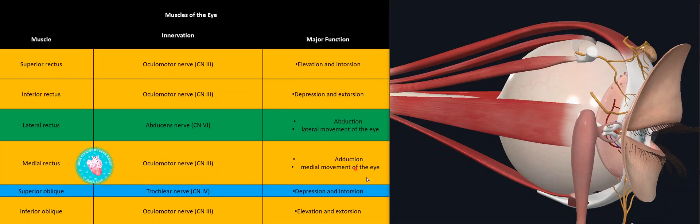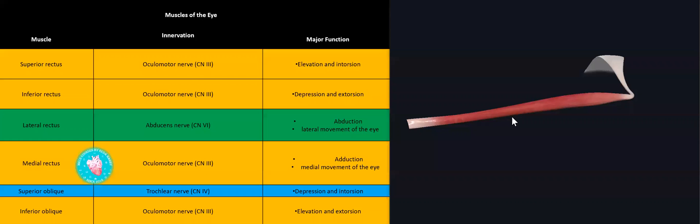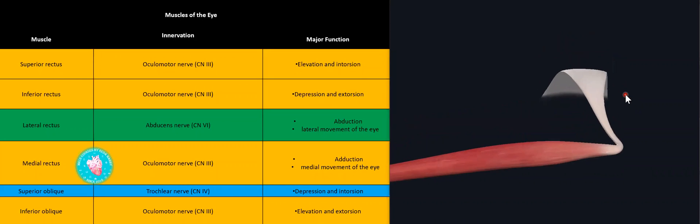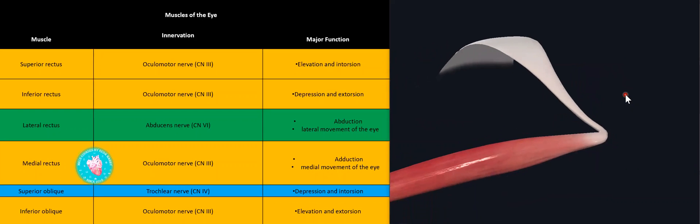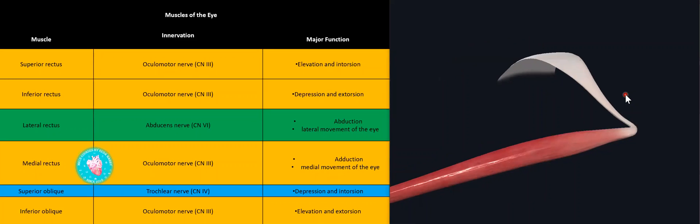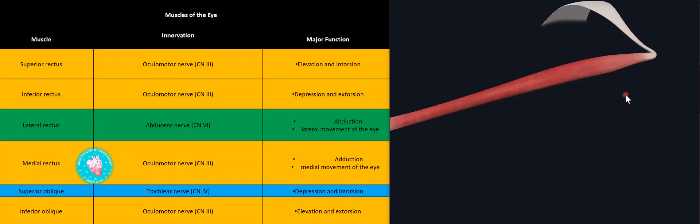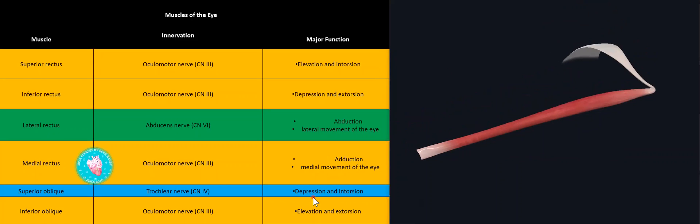It's called superior oblique but it's doing depression and intorsion of the eyeball because it's attached behind the equator. I will separate that muscle now to illustrate it very clearly. You can see it's called superior oblique, attached to the trochlea which is hidden here, and it becomes spread behind the medial equator. If you pull this muscle over the trochlea and backwards, the eye will be doing depression and intorsion.